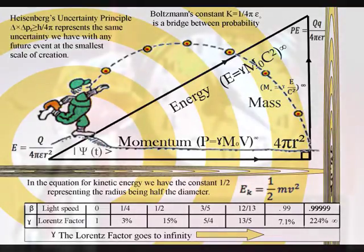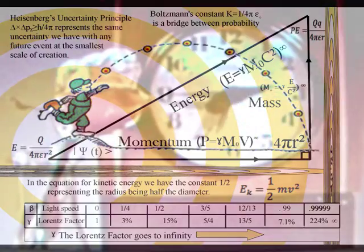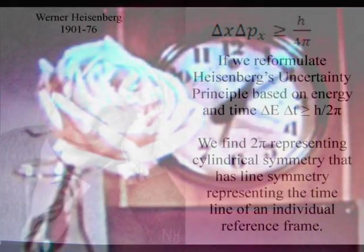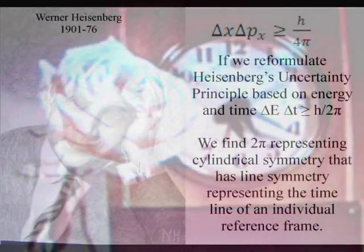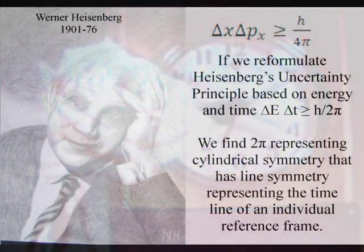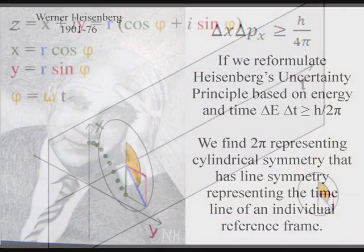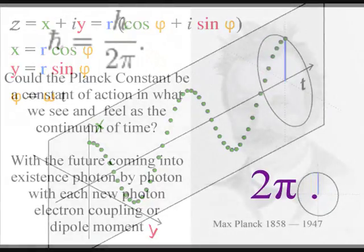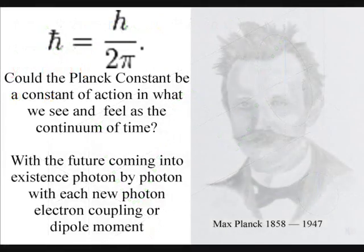This process forms a period of time and if we reformulate Heisenberg's uncertainty principle based on energy and time we find 2pi representing line symmetry. This line symmetry represents the timeline of the ball with the Planck constant being a constant of action in the dynamic geometrical process of space and time.